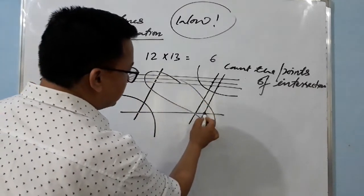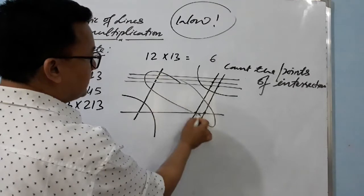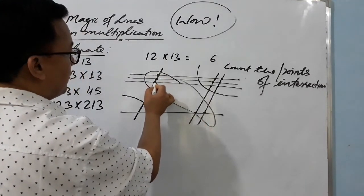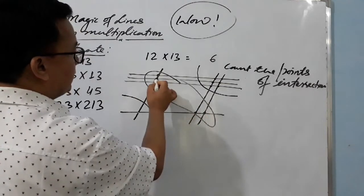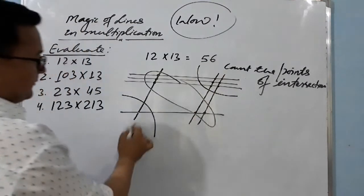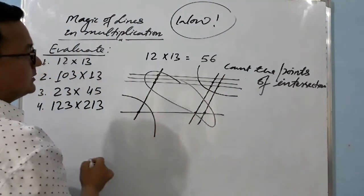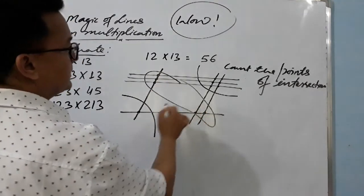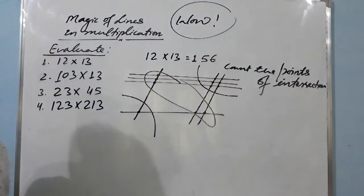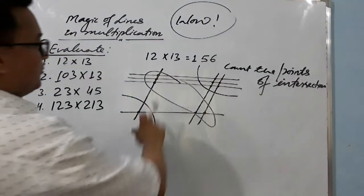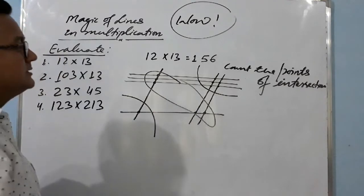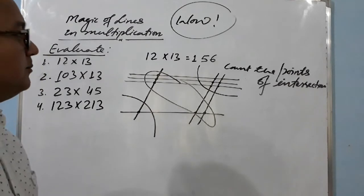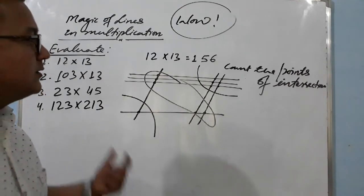Now here in the diagonal you count: one, two, three, four, five — five. And finally, on this side there is only one point of intersection — so one. The result is 156. This is the magic of lines — 12 times 13 equals 156. You can check with your calculator if you don't believe it. This is the beauty of mathematics!